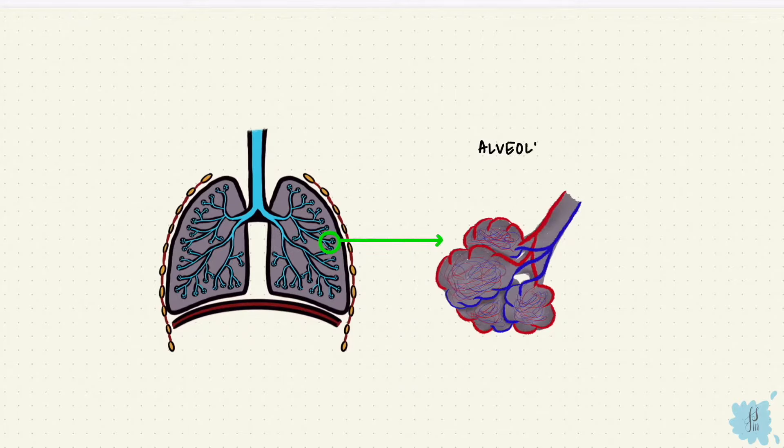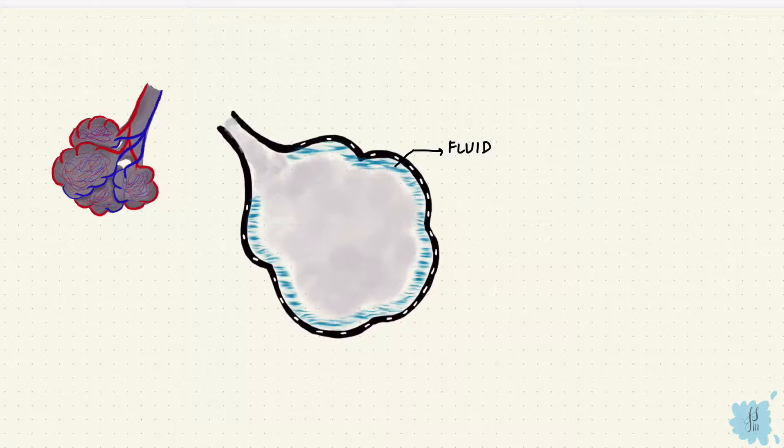The alveoli are the functional units inside the lung, and inside these alveoli is a fluid lining. Also inside the alveoli is air. So that creates an air-fluid interface.